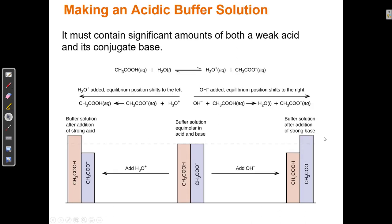Remember how you tell a weak acid from a strong acid. There are only six strong acids: HCl, HBr, HI, H₂SO₄, HNO₃, and HClO₄. Those are the only six strong acids, so any other acid is a weak acid.